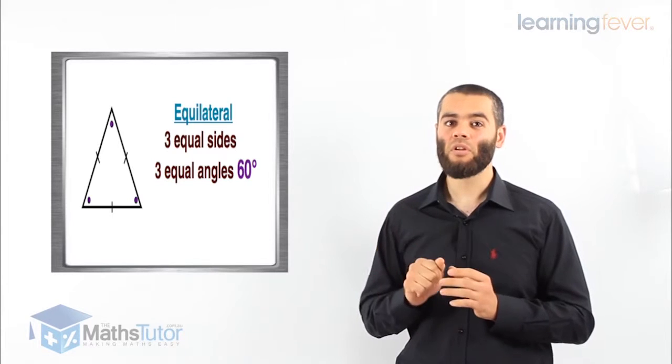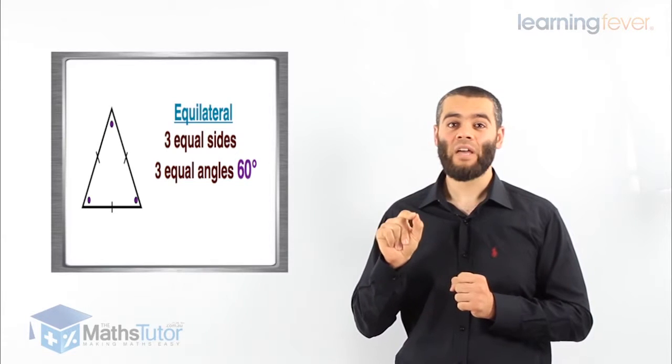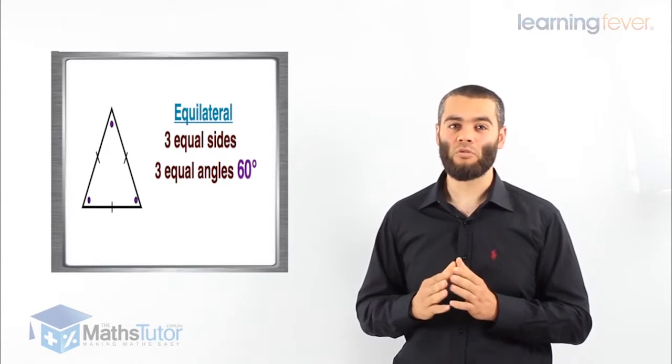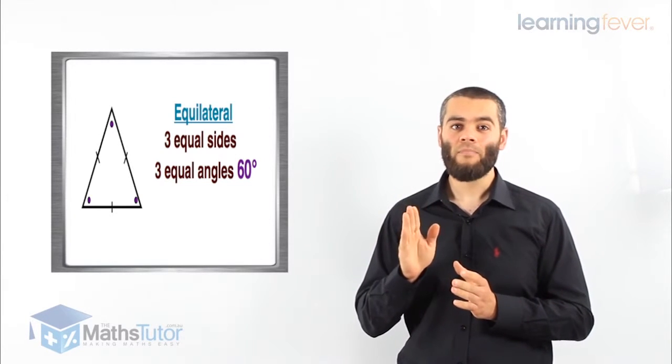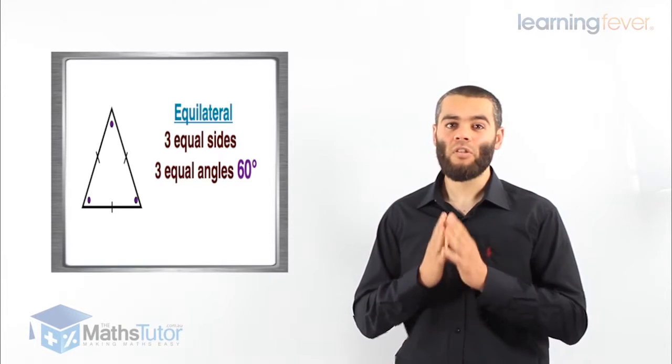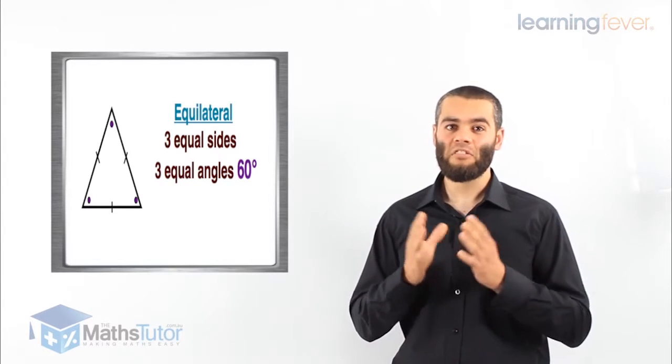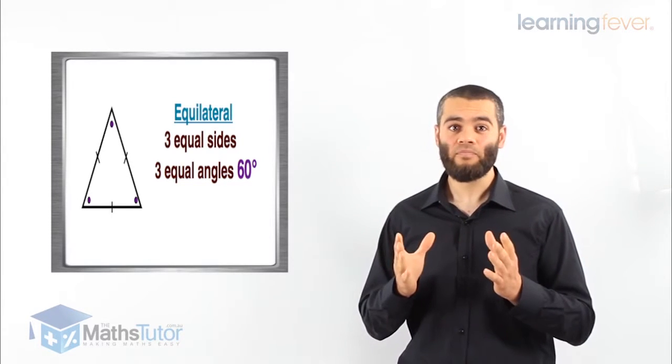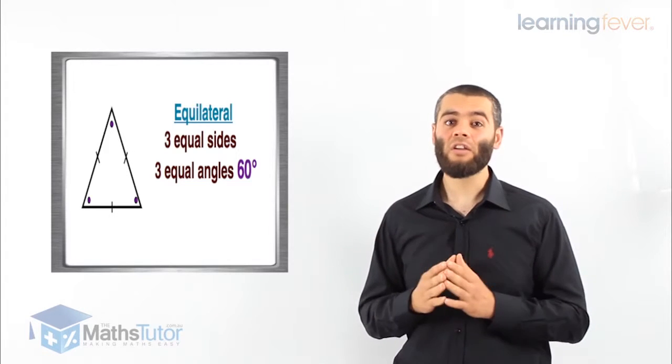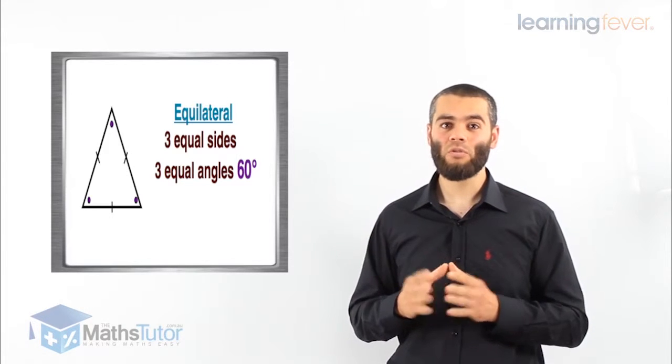Now, a very important feature of equilateral triangles is that they also have three equal angles, each one 60 degrees. It doesn't change. Whether the triangle has a side of 10 or 100, it doesn't matter. The angles will always be 60, 60, and 60 degrees.